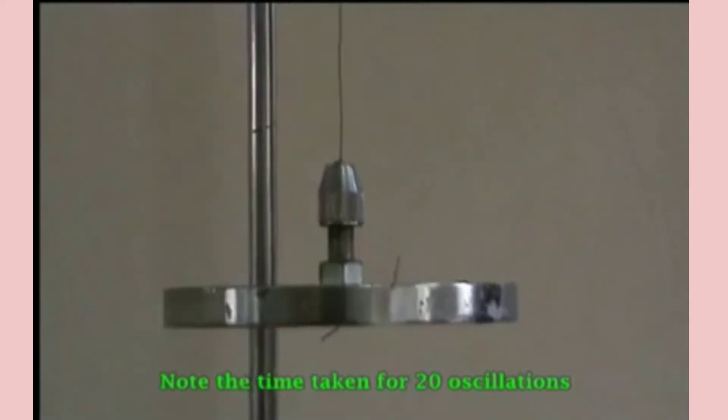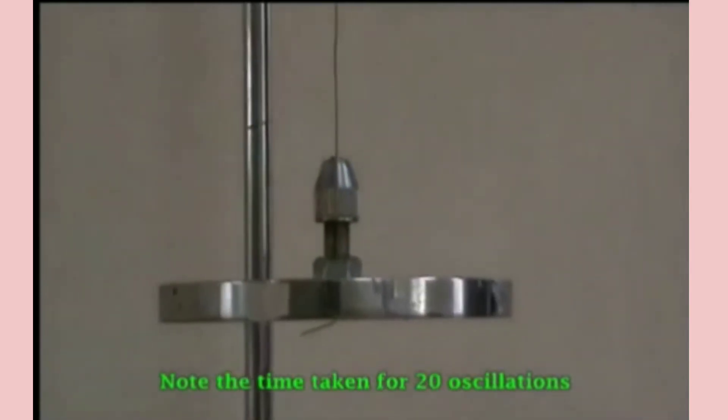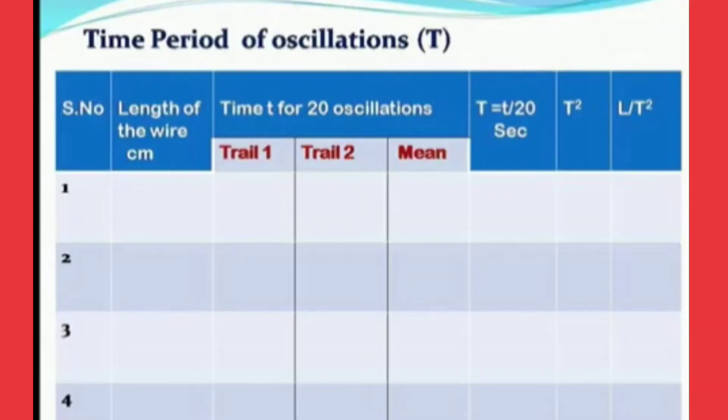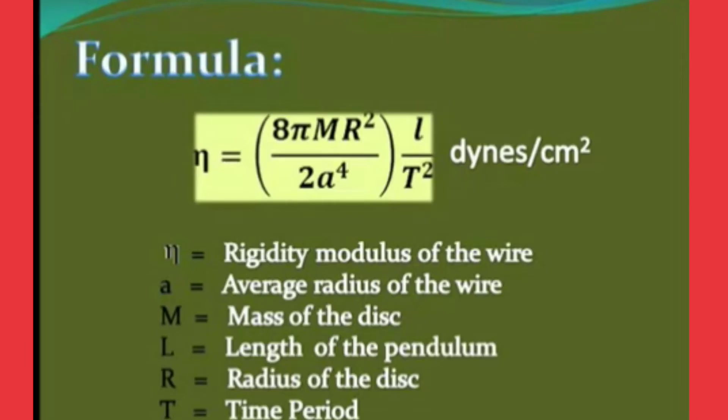Going right side, coming left side, four oscillations completed. Like that for twenty oscillations, note down those values in the given tabular form. We need to do that for two trials to get the accurate value and we need to calculate using the formula.